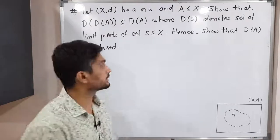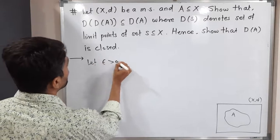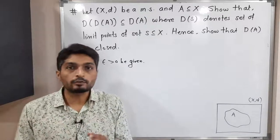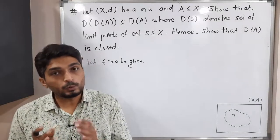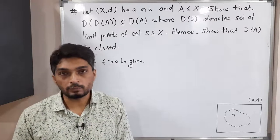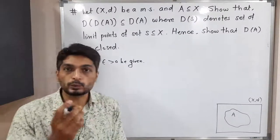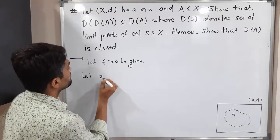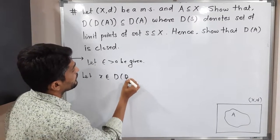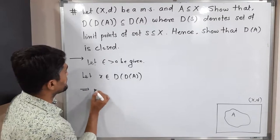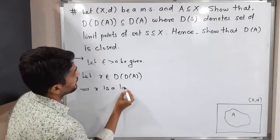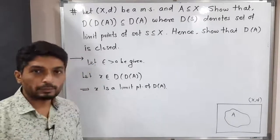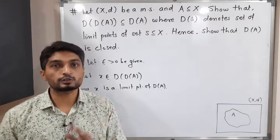Let epsilon greater than 0 be given. We have to prove that D(D(A)) is a subset of D(A). To prove one set is a subset of another, we take any arbitrary element from the first set and prove that it is in the second set. So let X belong to D(D(A)), which simply means X is a limit point of D(A). We are going to follow the epsilon definition of limit point.